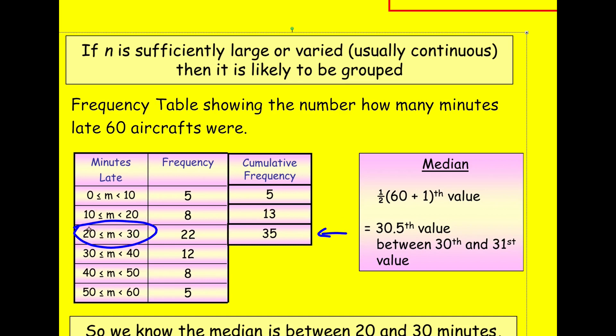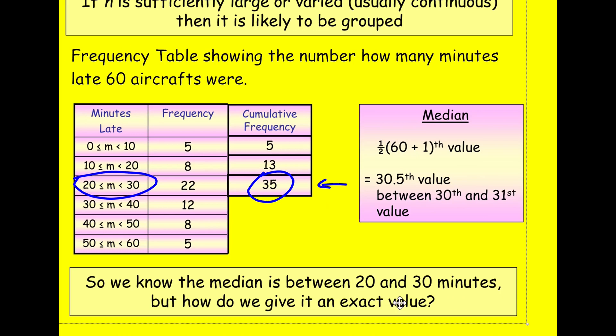but we don't cover that on the OCR specification. So for now, we would just say the median was in this group because, because we can see basically we've done five plus eight, that's 13. And then you can see that the last one in this group is the 35th. So the 30.5th has got to be before that.